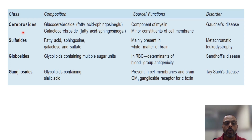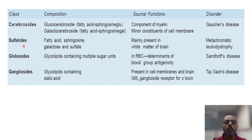That is about the first glycolipid. The second one is the sulfatides. Sulfatides contain sulfate as an additional group. They are mainly present in the white matter of the brain, and the disorder associated with sulfatides is metachromatic leukodystrophy, which occurs due to the deficiency of the sulfatidase enzyme, also known as aryl sulfatase enzyme.